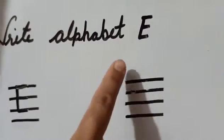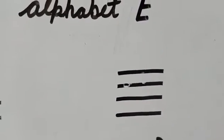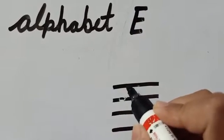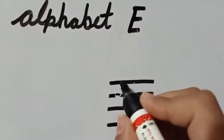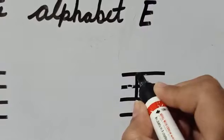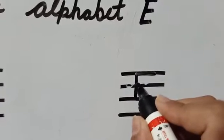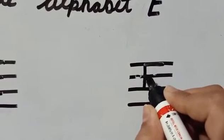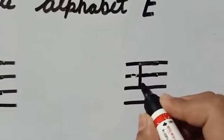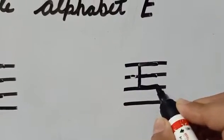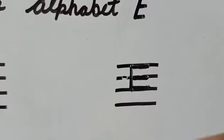Now, how to write capital E? Let's start. Capital E — start from the top and draw a standing line down. Go again to the top and draw one sleeping line to the right. Then go to the middle and draw another sleeping line. Then go to the bottom and draw one more line in the same way. E for elephant.